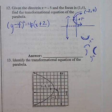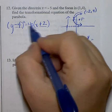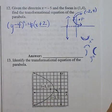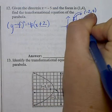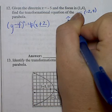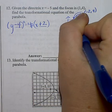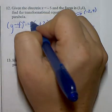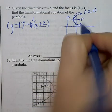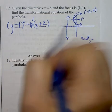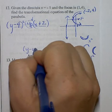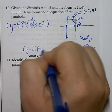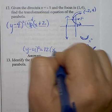Now the last thing we need to know, we know p is positive. We need to know what is p. So p is the distance from the vertex to the focus, which is 3, or the distance from the directrix to the vertex, which is 3. And it's a positive 3, since this is opening up to the right. 4 times 3 is 12. This portion is 12. Final answer is y minus 4 quantity squared equals 12 times the quantity x plus 2.